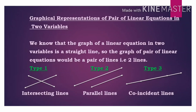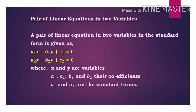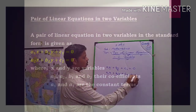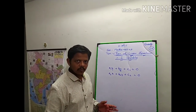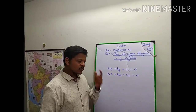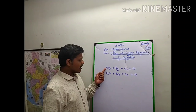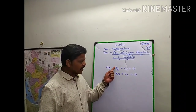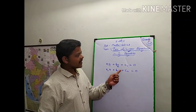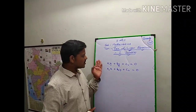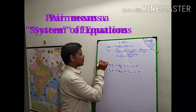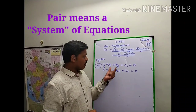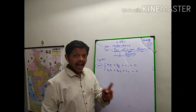What you can see on screen now: the first equation uses notation with subscript 1, and the second equation uses subscript 2. So it would be a1x plus b1y plus c1 equal to 0, and a2x plus b2y plus c2 equal to 0. Here a1 and a2 are the coefficients of x, b1 and b2 are the coefficients of y, and c1 and c2 are the constant terms. This pair is called a system of equations — a pair of linear equations in two variables.